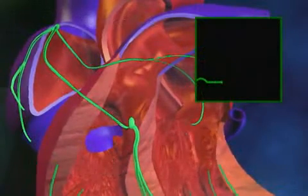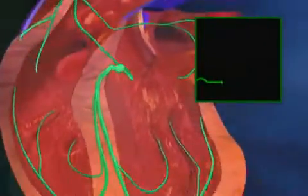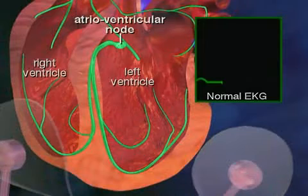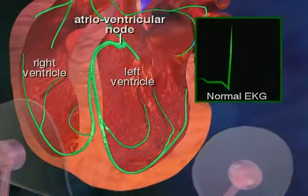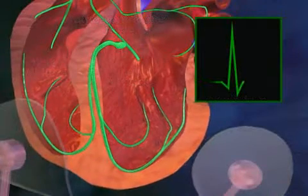The SA node triggers the atria to contract, pushing blood into the ventricles. The electrical signal then travels through the atrioventricular node, or AV node, and into the ventricles. This signal now causes the ventricles to contract, pumping blood to the lungs and body.